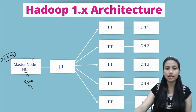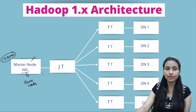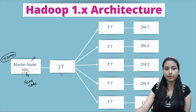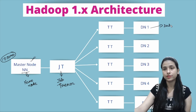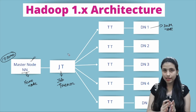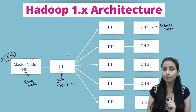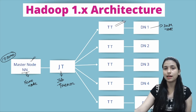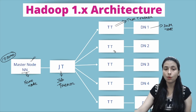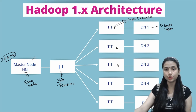This master node is also called the Name Node. After the Name Node, there is a Job Tracker (JT). After the Job Tracker, there is a slave node, which is also called the Data Node. In Hadoop 1.x architecture, there can be only one master node and multiple slave nodes. With each Data Node, there is something called a Task Tracker connected — one Task Tracker per Data Node.